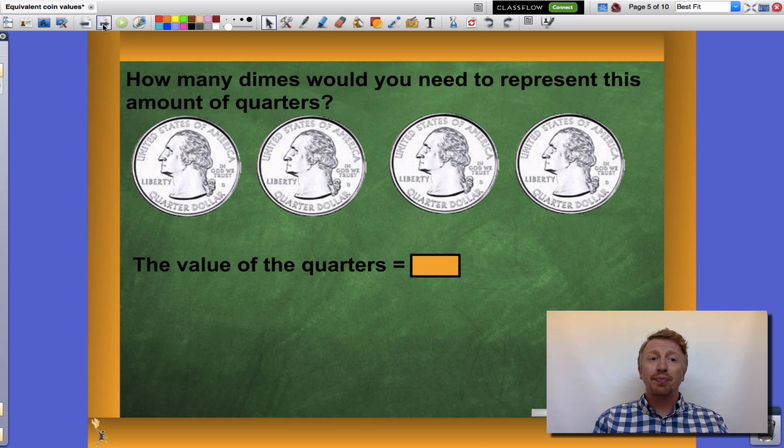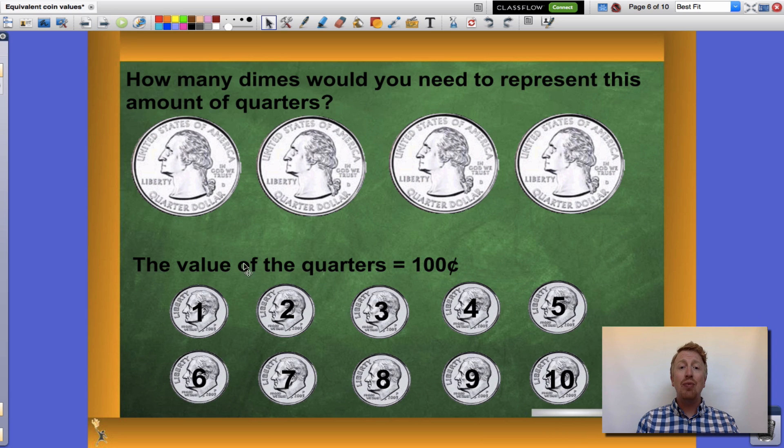Let's take a look at another problem. How many dimes would you need to represent this amount of quarters? Well, what is the value of four quarters? Each quarter is worth twenty-five cents, so twenty-five, fifty, seventy-five, one hundred. Four quarters are equal to one hundred cents. How many dimes would be equal to that same amount? I would need ten dimes to equal one hundred cents as they are each worth ten cents. Four quarters are equivalent to or equal to ten dimes.